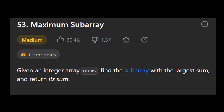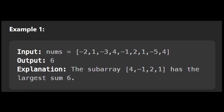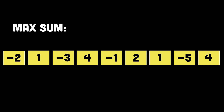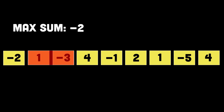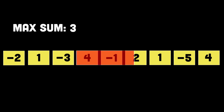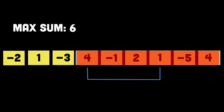One good example is the maximum sum sub-array problem, where given an array of integers, you need to find the sub-array of contiguous elements with the maximum sum. You can use the sliding window approach by initializing two pointers — one at the beginning and one at the end of the window. As you slide the window to the right, you add the current element to the sum and compare it with the maximum sum found so far. If the current sum becomes negative, you move the window's left pointer to the next element. By continuously updating the maximum sum, you can find the sub-array with the largest sum efficiently.